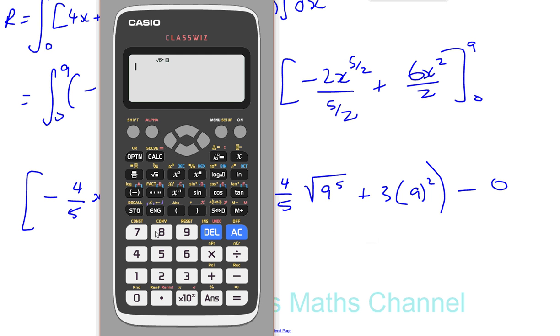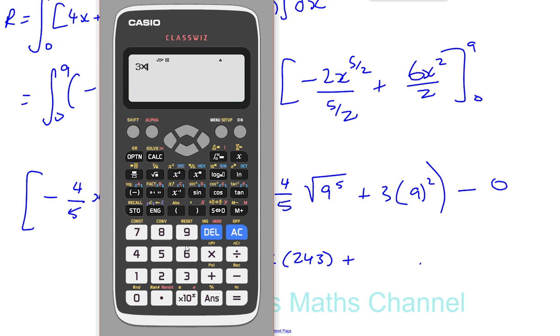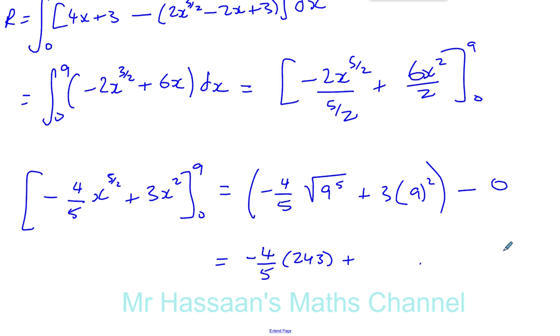You've got 3 to the power of 5. 3 to the power of 5. That gives you 243. So you've got minus 4 over 5 times 243 plus 3 times 81. You've got 3 times 81 which gives you 243.